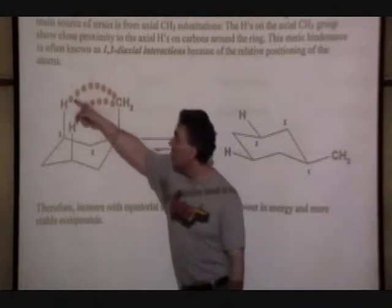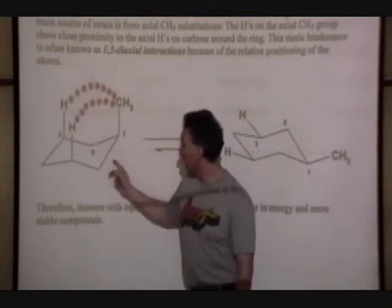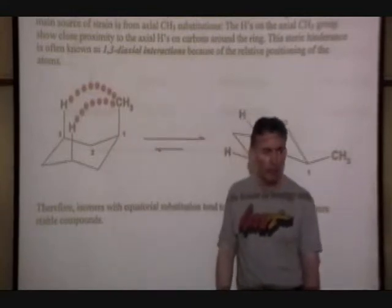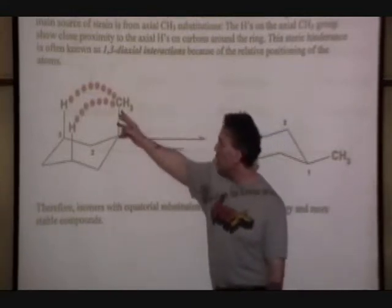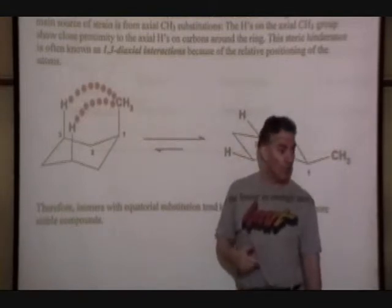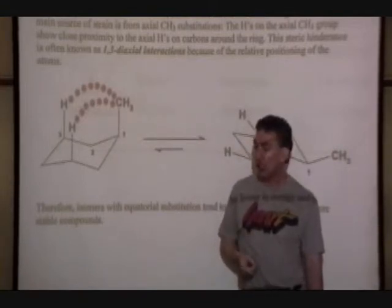And there's a second energy the other way around the ring. One, two, three, so it's again a 1,3 interaction. The groups we're concerned with are both axial, so it's again a 1,3-diaxial interaction.